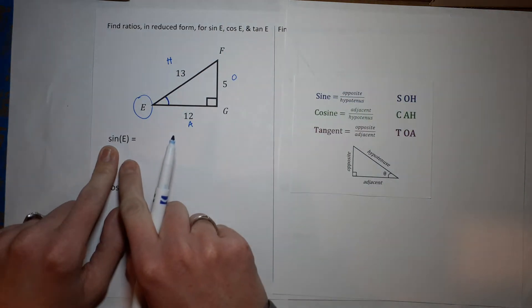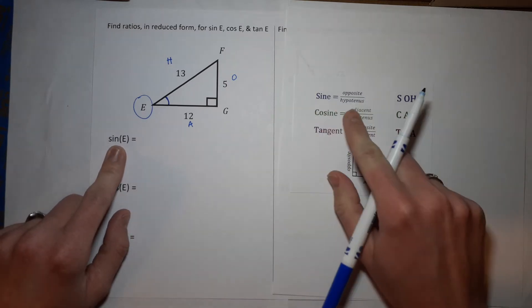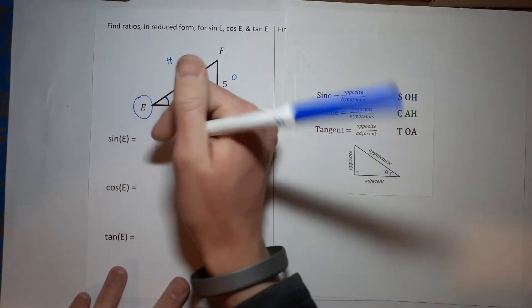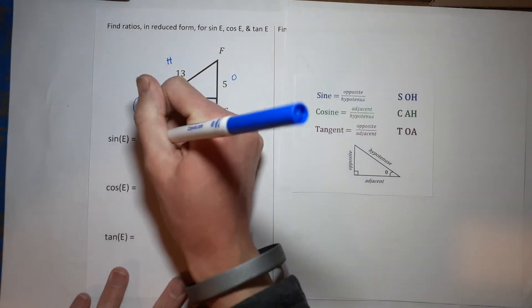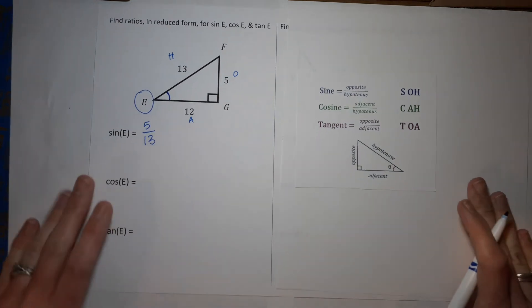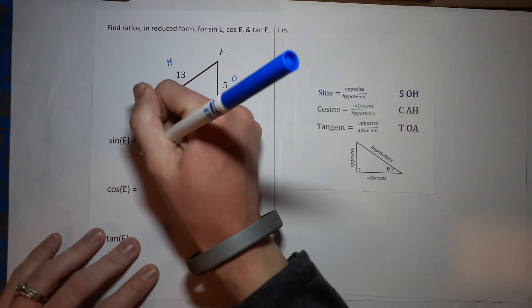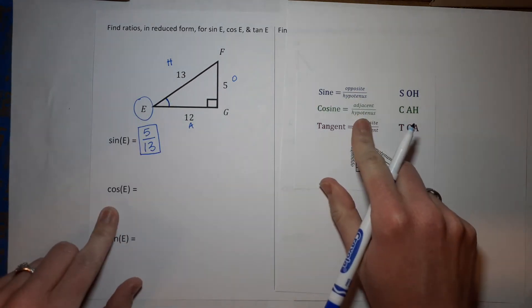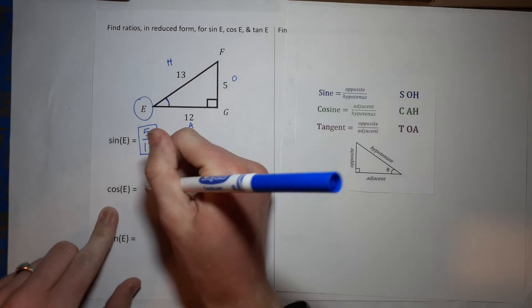Now you are literally just writing the numbers on top of each other. So the sine of E is opposite over hypotenuse. My opposite side is 5, hypotenuse is 13. Oh my gosh, that can't be simplified, so I'm done. That's the sine of E.